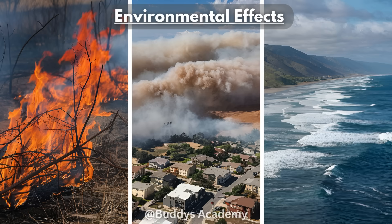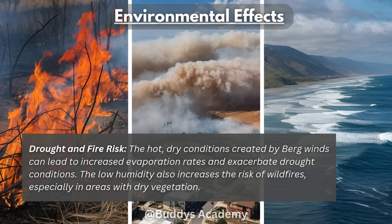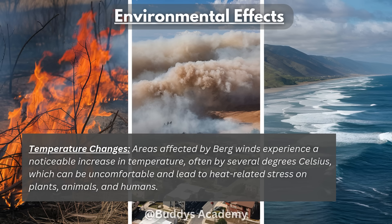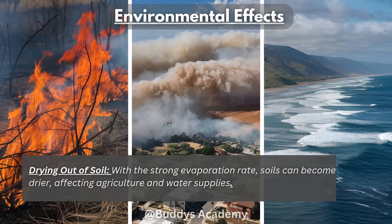What are some environmental effects of Bergwinds? The first would be drought and fire risk. The hot, dry conditions can lead to increased evaporation rates and exacerbate drought conditions. The low humidity also increases the risk of wildfires, especially in areas with dry vegetation — since Bergwinds often occur in winter, vegetation is dry and can catch alight. Next is temperature changes: areas affected experience a noticeable increase in temperature, often by several degrees Celsius, which can lead to heat-related stress on plants, animals, and humans. Another effect is the drying out of soil — with a strong evaporation rate, soils become drier, affecting agriculture and water supplies.